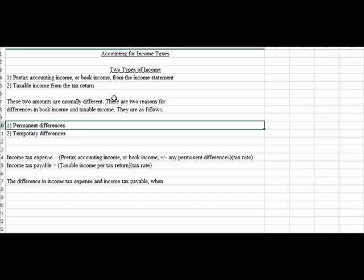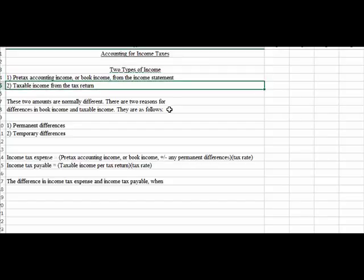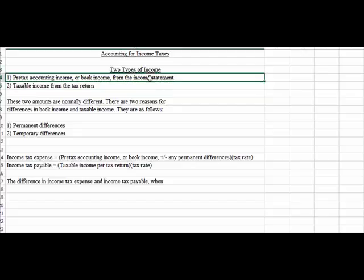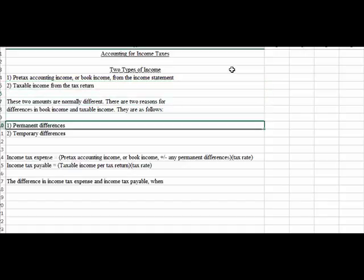So for instance, if a company earns interest on city bonds or municipal bonds, well that would be a part of their net income or income on the books. But municipal bond interest is never taxable, so it would not be included in taxable income. That's a permanent difference there. If a corporation decides to pay life insurance premiums on key executives, they can deduct that expense as insurance expense or maybe compensation expense on the financial statements in coming to net income. That's not deductible as an expense in coming to taxable income on the tax return. That creates a permanent difference.